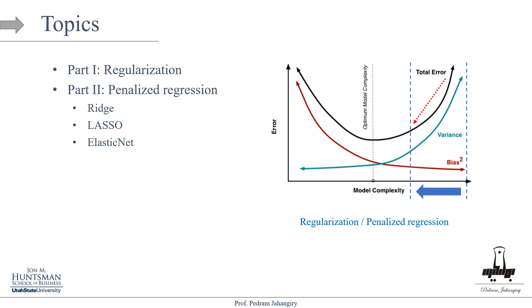You've seen this plot many times — error versus model complexity. For regression, you can think of it as mean squared error in the cross-validation or test data. As the model becomes more complex, the bias squared is going to decrease, meaning on average the model captures the patterns in the data better. However, as you make the model more complex, it starts memorizing noise and becomes unnecessarily complex and flexible.